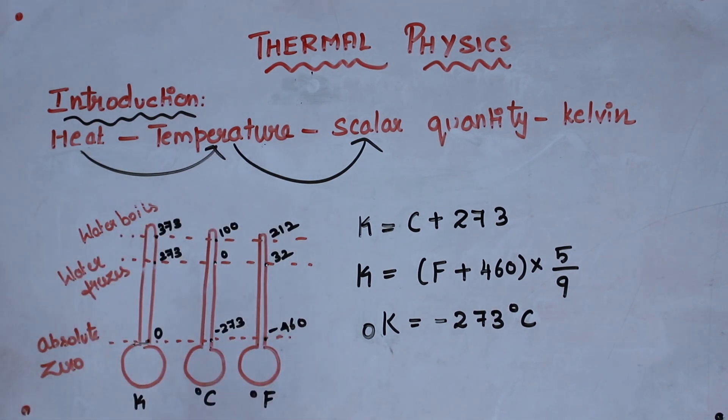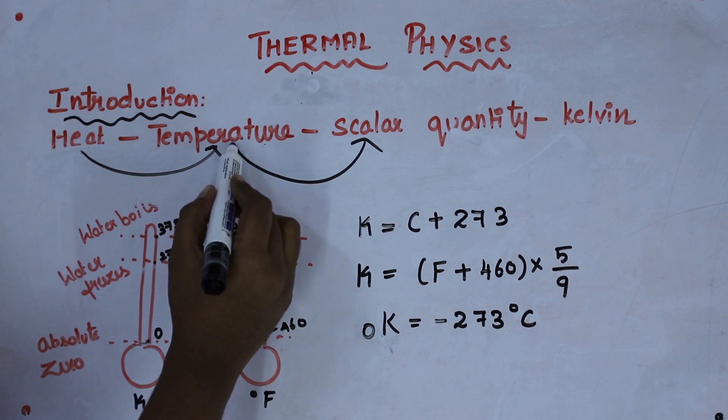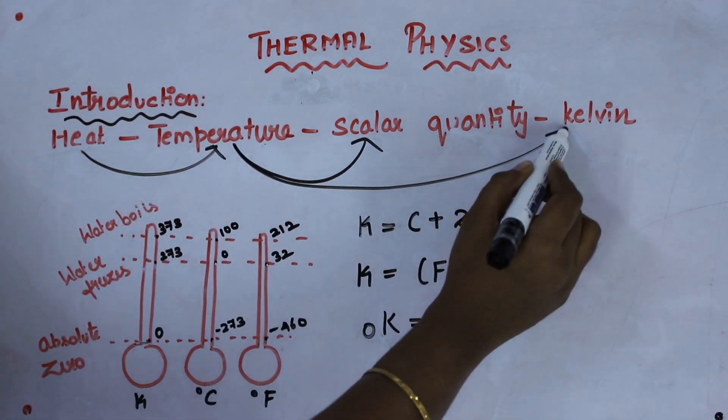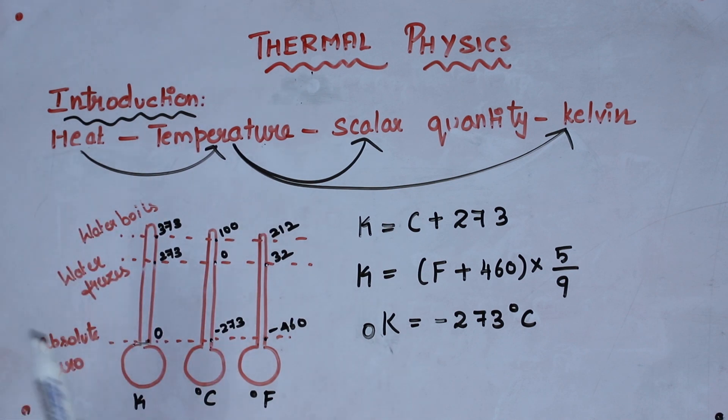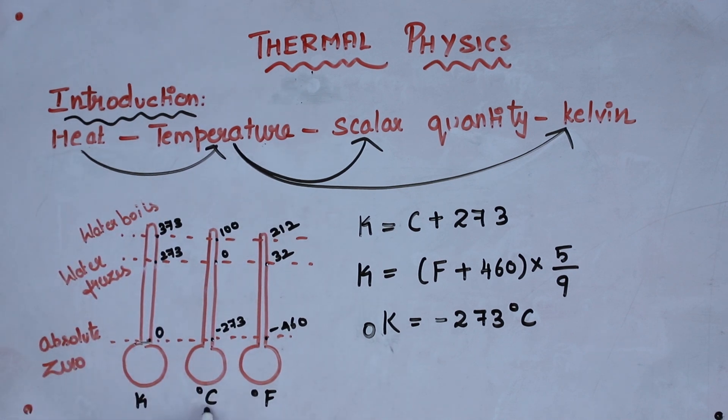In physics we usually measure everything using the SI unit. So the SI unit of temperature is Kelvin. Temperature can also be measured by other two common units which are degree Celsius and degree Fahrenheit.